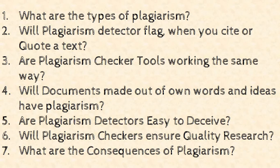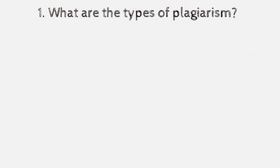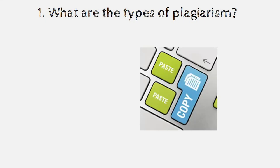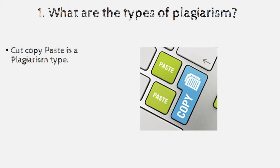The first question: what are the types of plagiarism? Everybody thinks cut-copy-paste is plagiarism — yes, that is one type. But before going to the types, we should understand what plagiarism is. The word 'plagiarize' in Latin means 'to kidnap' — you take away somebody's content, ideas, thoughts, or language without their permission. In research, you don't need permission, but you need to cite whenever you take ideas, content, thoughts, or language. The most common type is complete plagiarism.